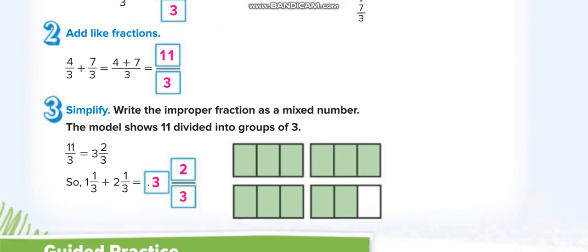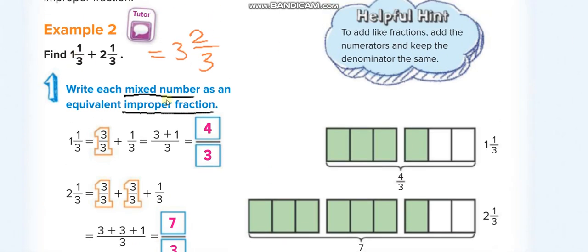Here it is 3 whole 2 over 3. What they are doing here is they convert this one into improper fraction. This is another way of adding mixed numbers, you can use this way also but the first one is easier. To convert a mixed number into improper fraction we multiply the whole number with the denominator and then add the numerator. 1 times 3 equals 3 plus 1, 4, so it becomes 4 over 3. 2 times 3 equals 6 plus 1, 7, 7 over 3.